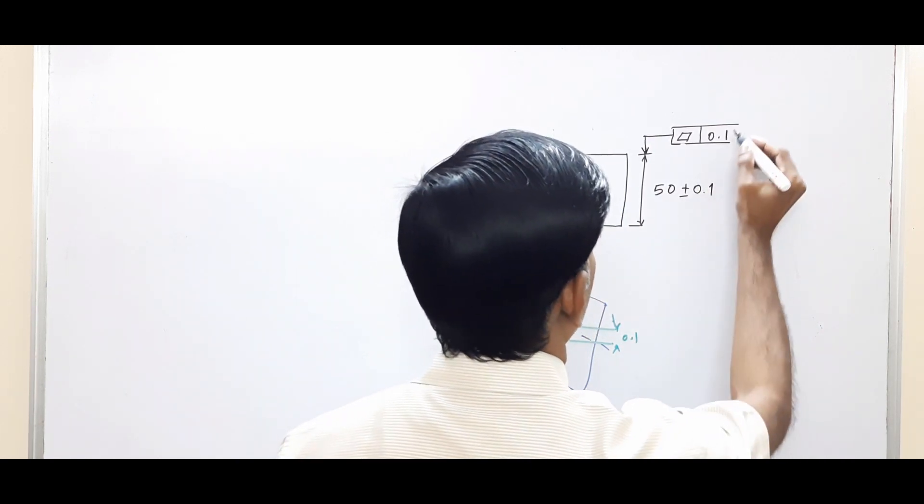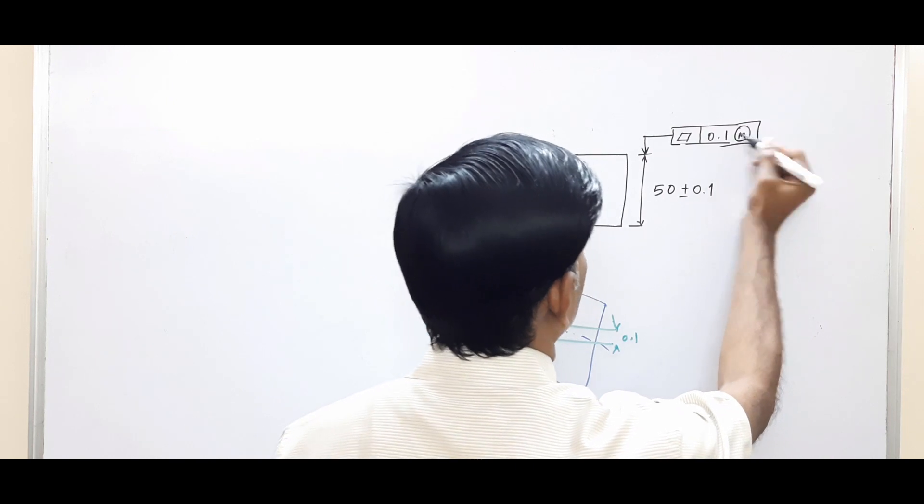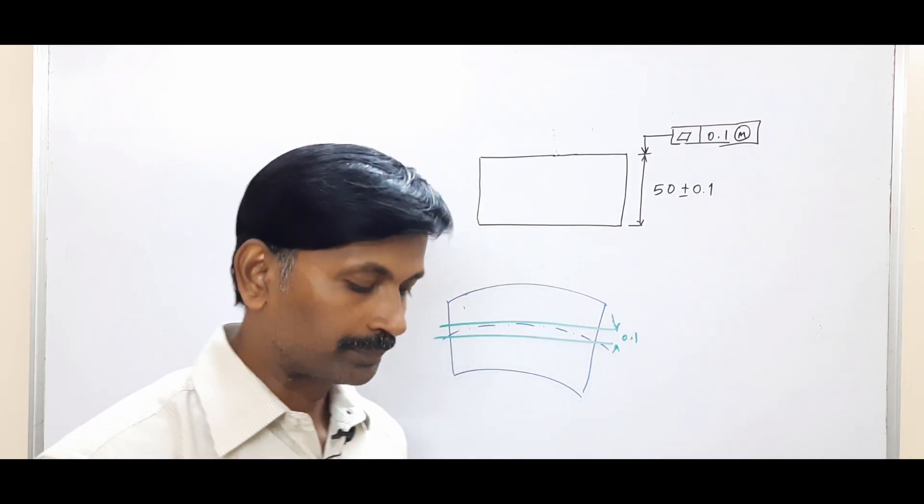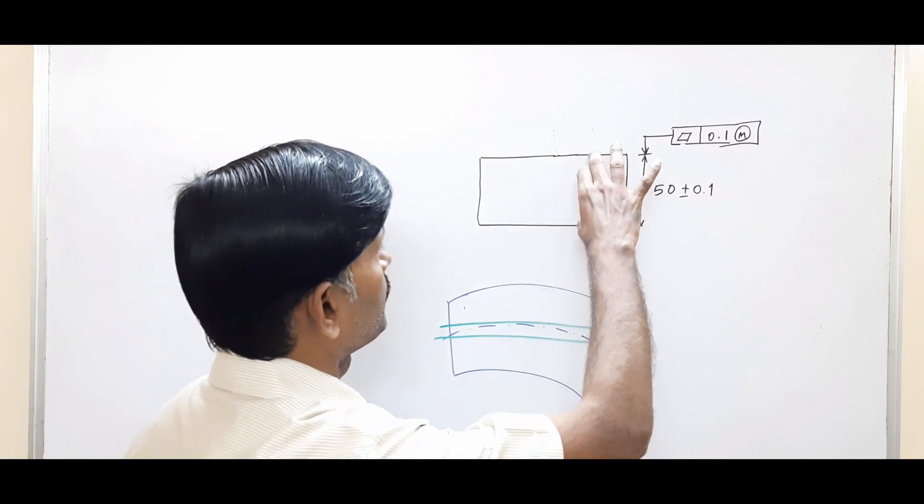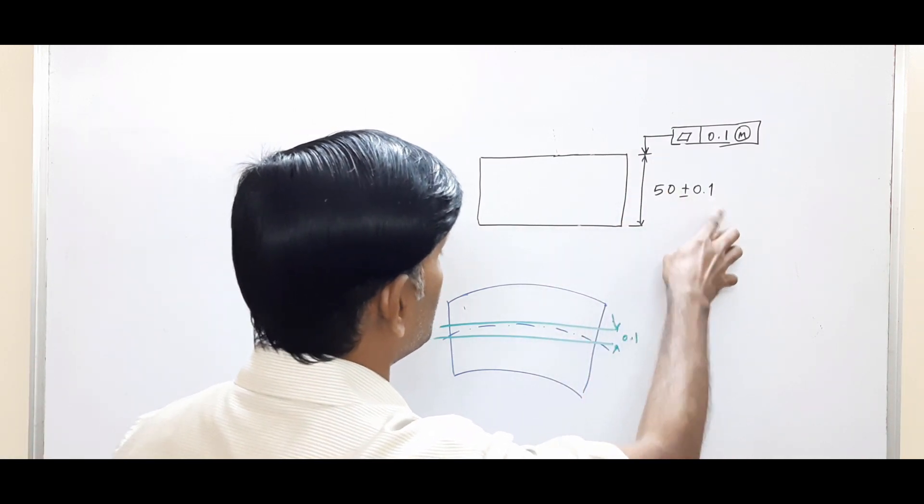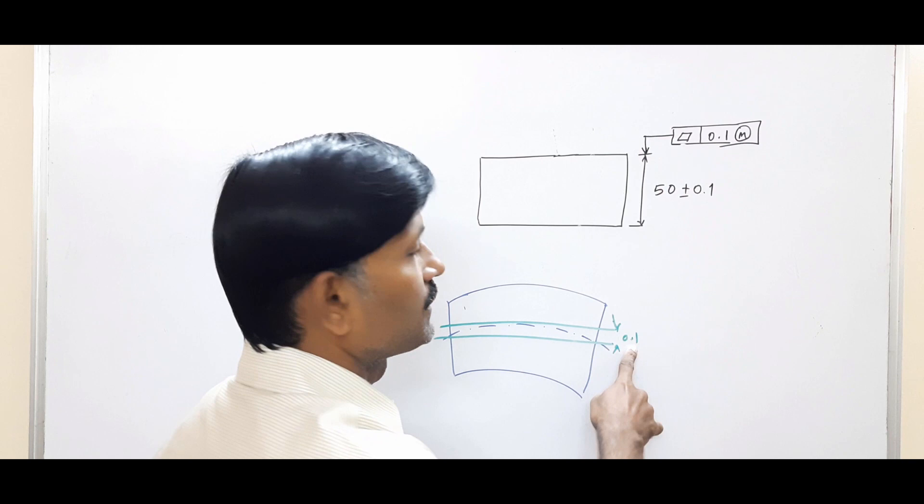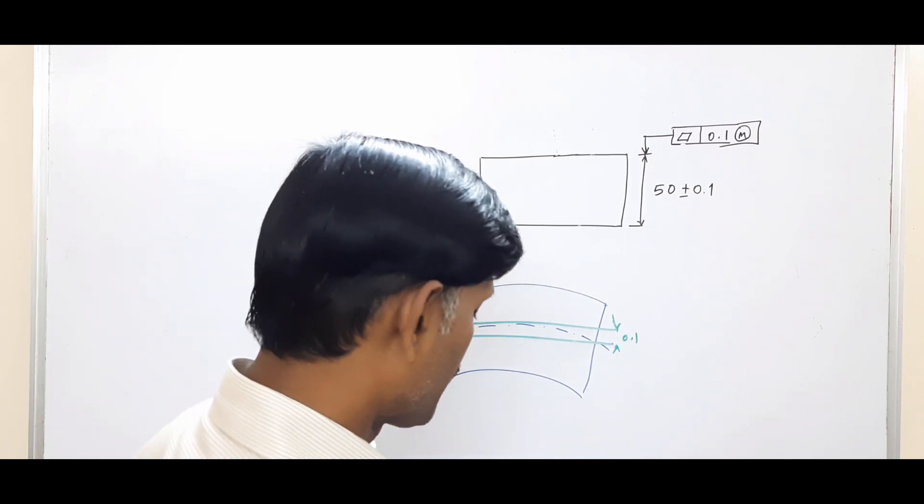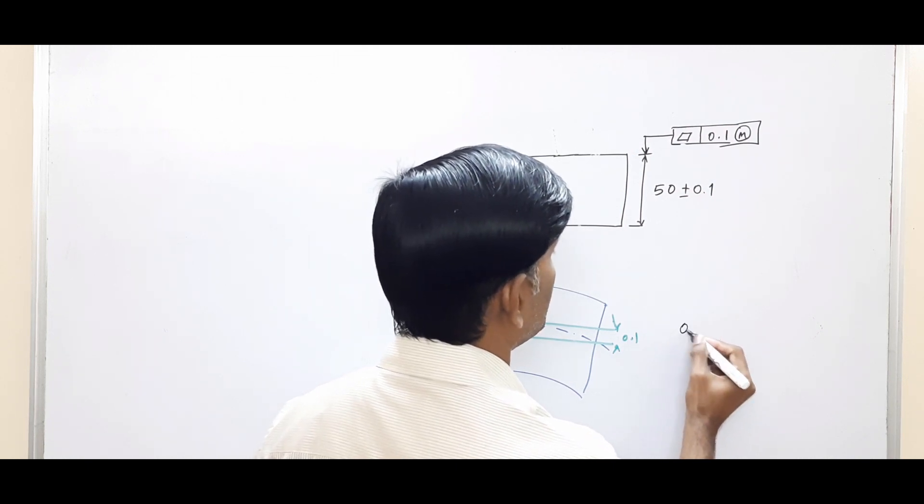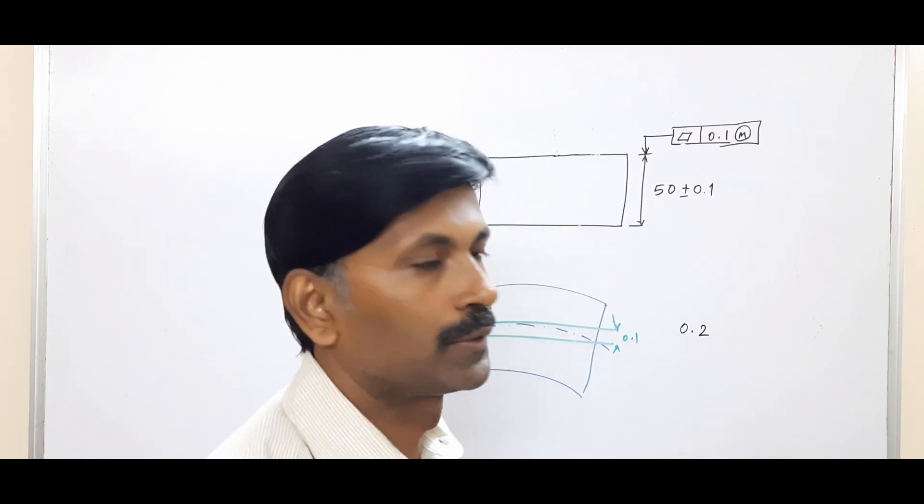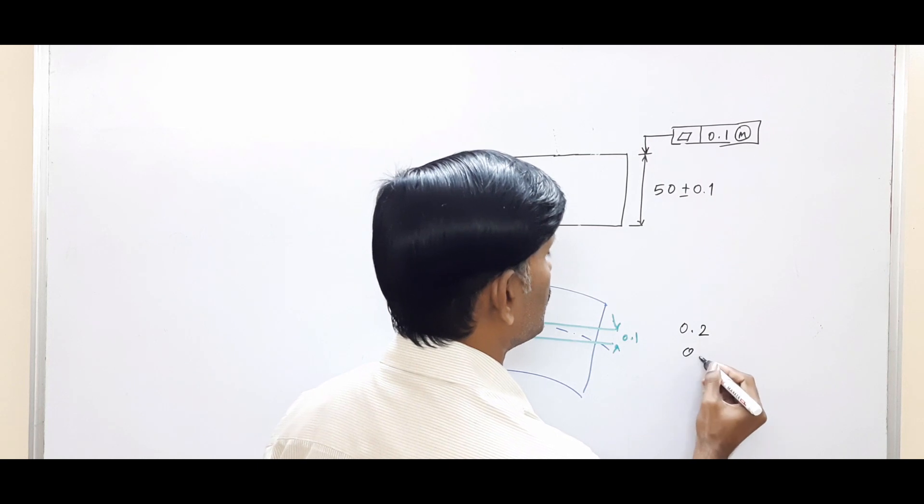So what does this tell us? Only when the part is produced at 50.1, the flatness error allowed is 0.1. And when the part is produced at 49.9, then we get a bonus tolerance of 0.2, so the flatness error will become 0.3. This is about controlling flatness for a planar surface and a feature of size, that is the center plane.